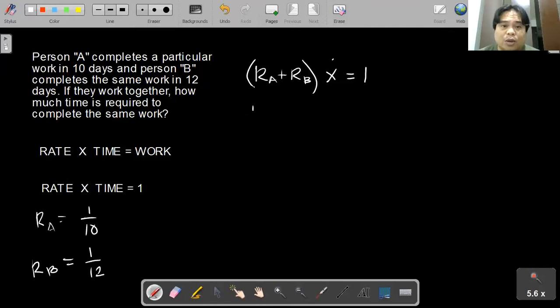So RA is 1 over 10 plus rate B is 1 over 12, and then X equals 1.